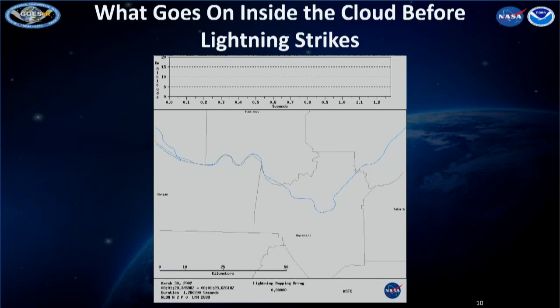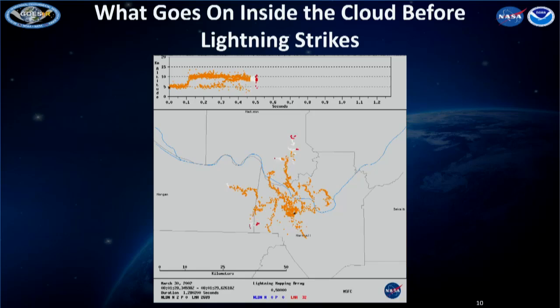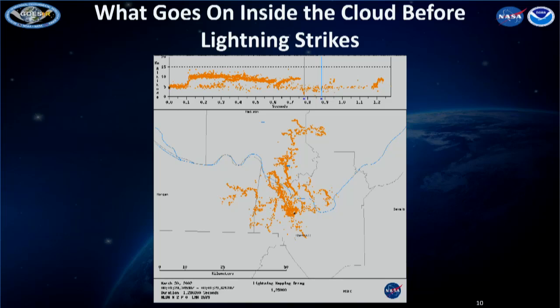Here's what lightning looks like from a regional very high-frequency network of receivers that can map radio sources from lightning. Notice this is 50 kilometers in horizontal distance. The flash begins here — channels propagate through the cloud over 50 kilometers — then you see a cloud-to-ground strike, another strike, and a recoil streamer going back through the cloud. The ground-based lightning networks would call the two ground strike points two separate cloud-to-ground flashes, when in reality it's one lightning flash with two strike points to ground during its evolution.